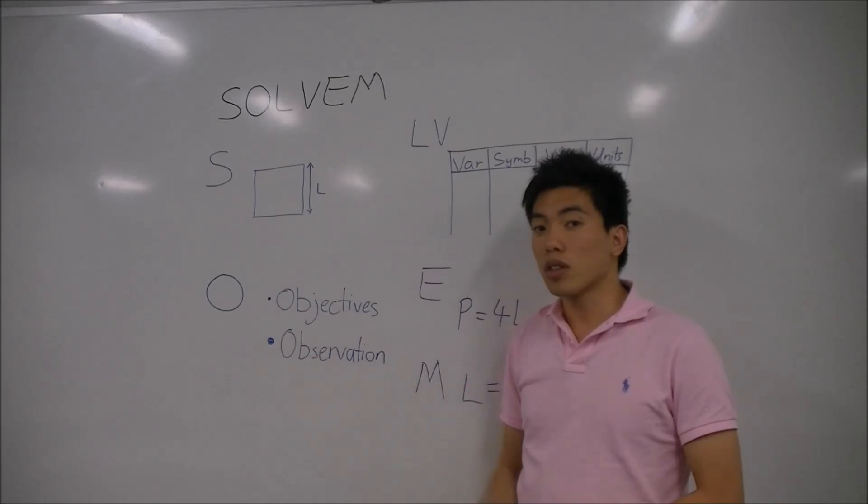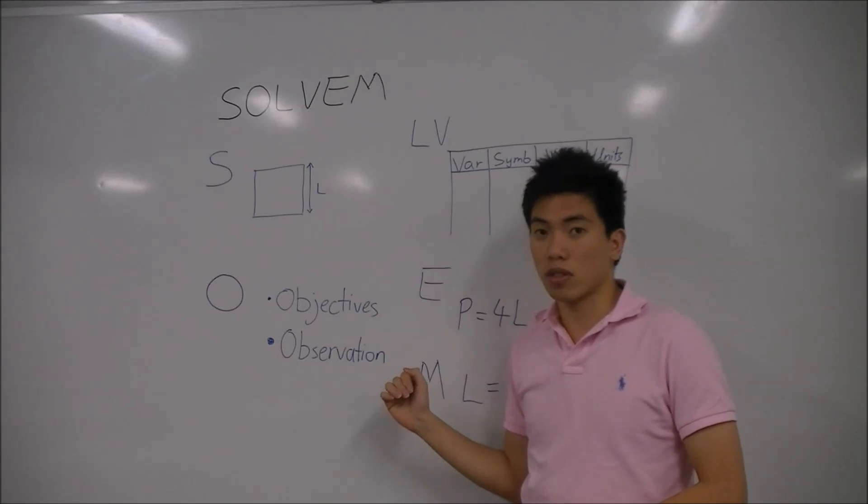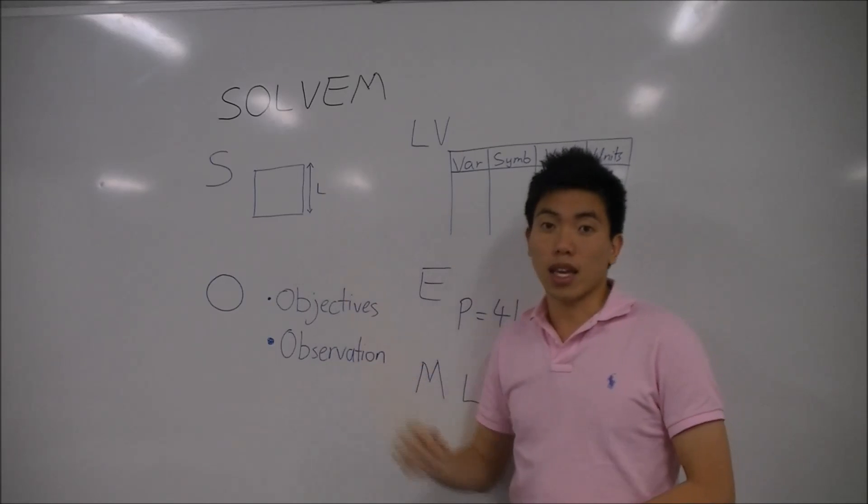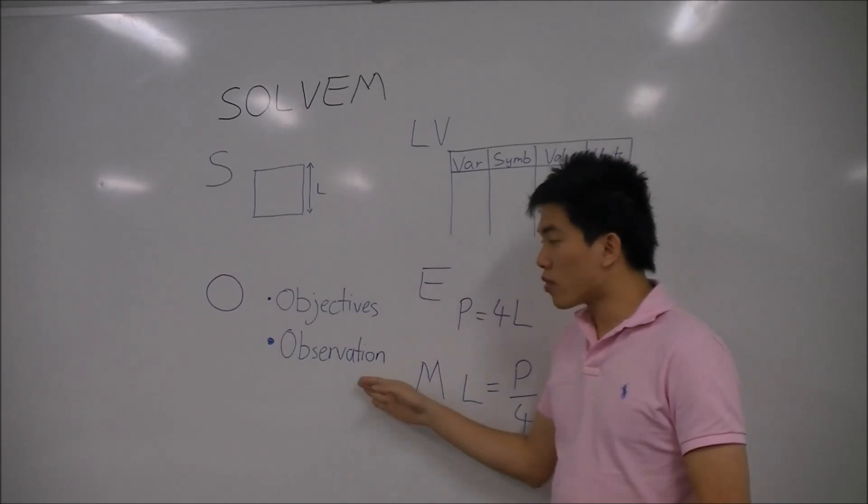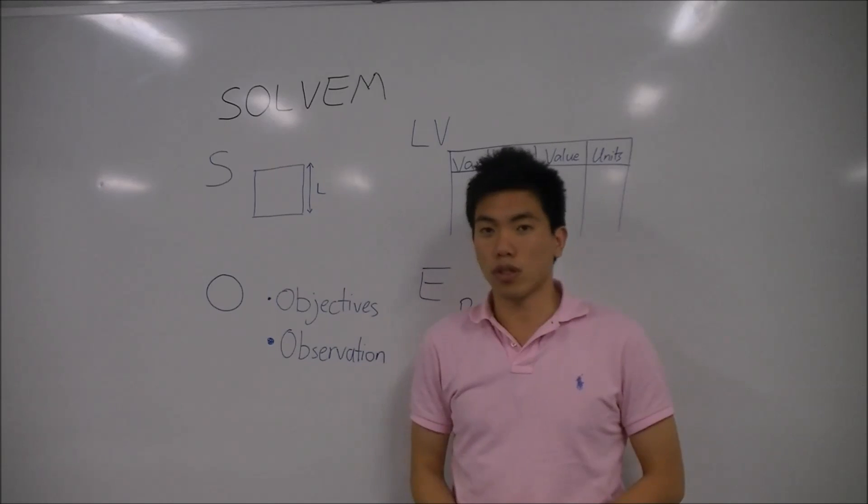In my O section, you have to make sure you complete both components, which is objectives and observations. So, my objective would be to find the length of one side, and my observations, there could be many, in this case I only have one, is my square has four sides.